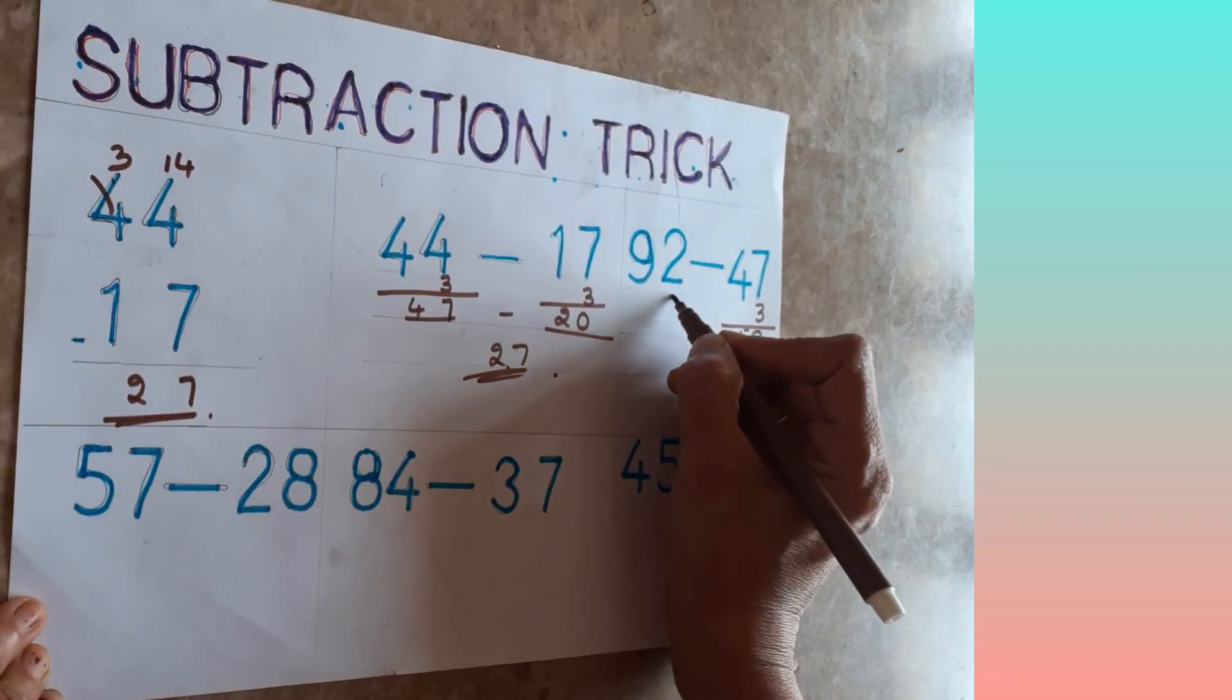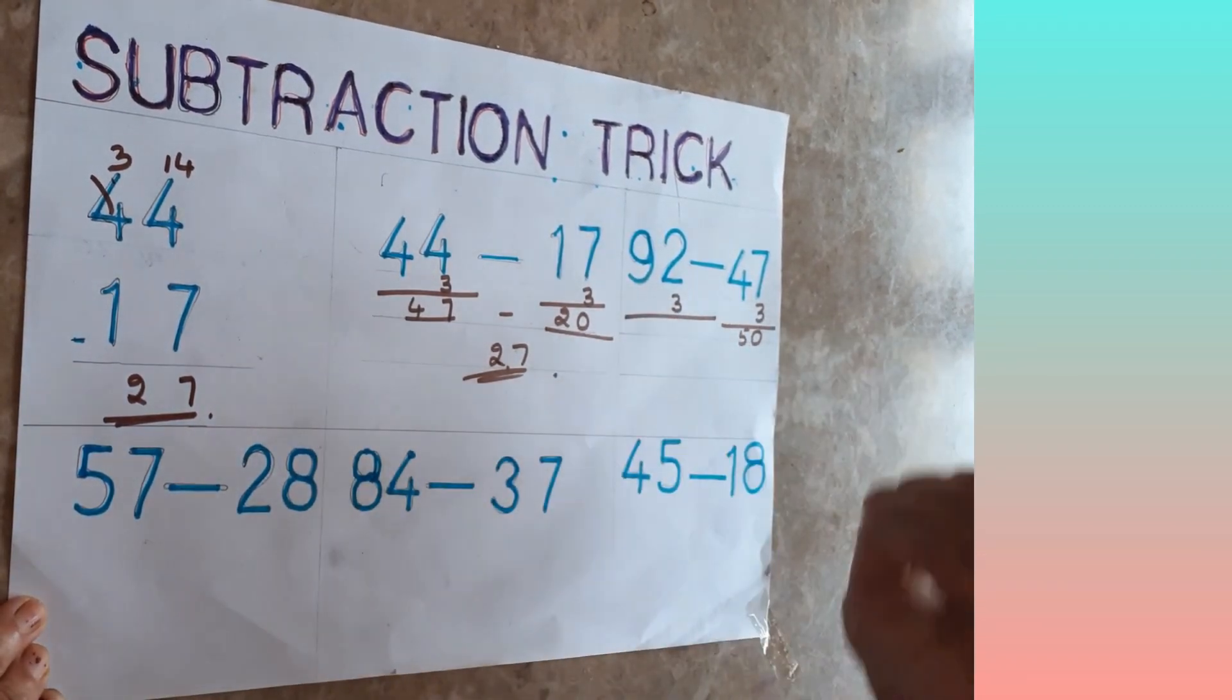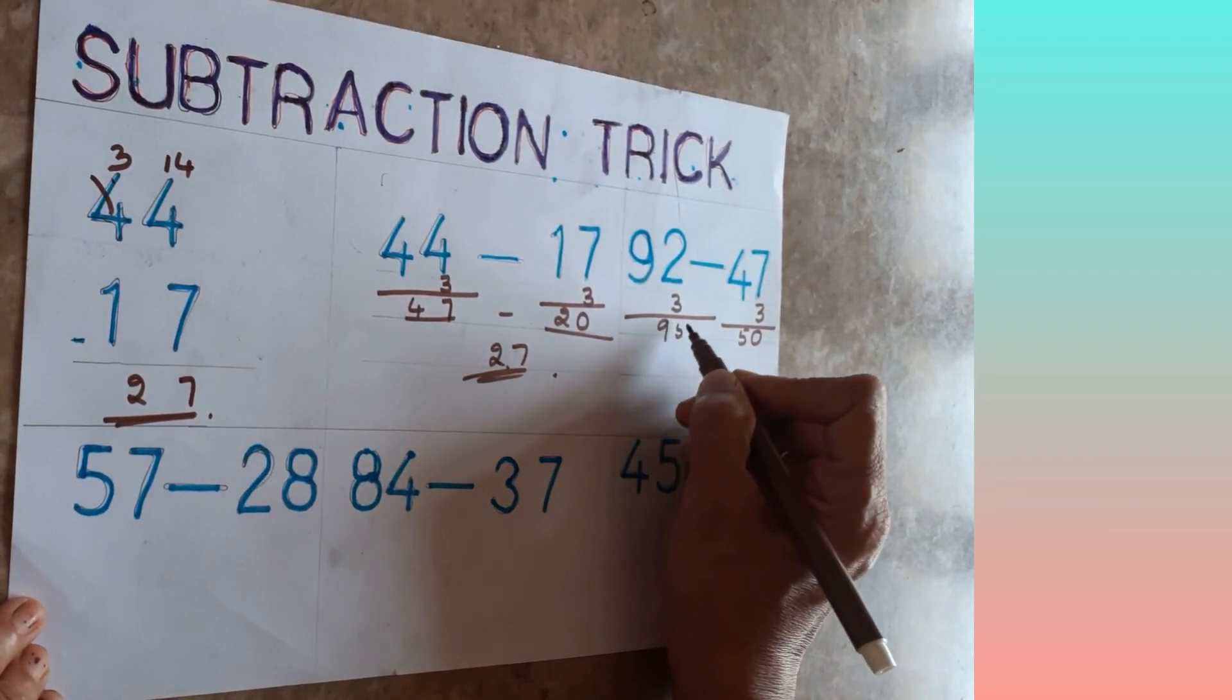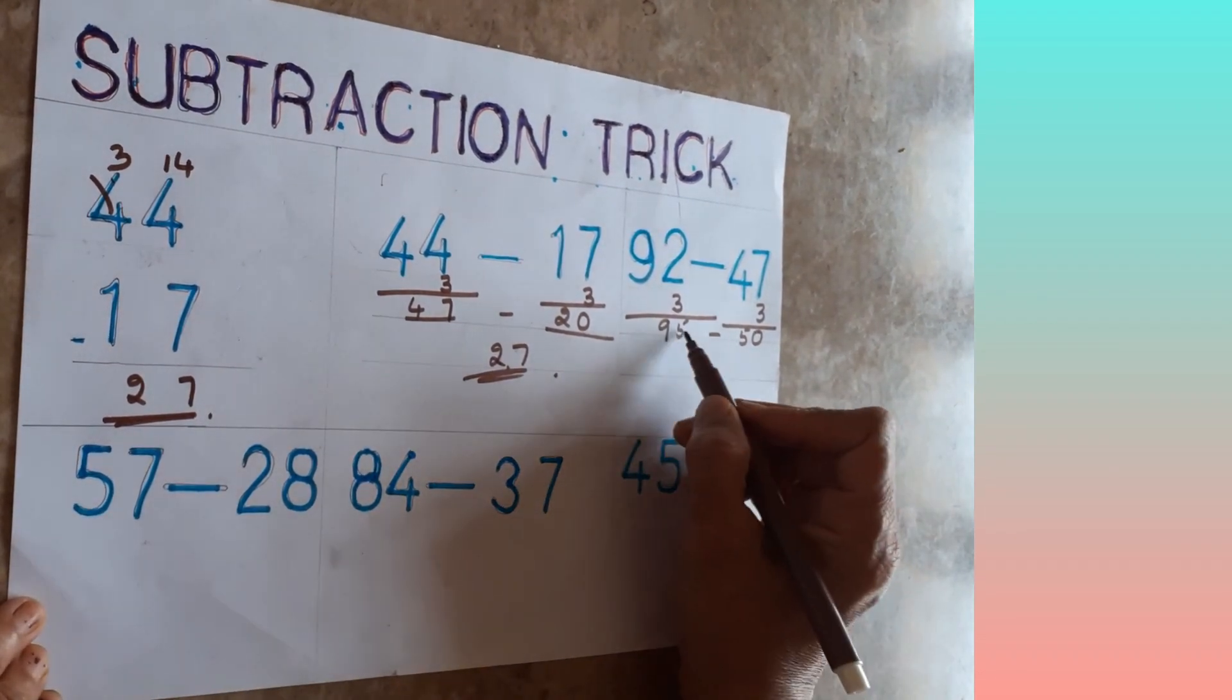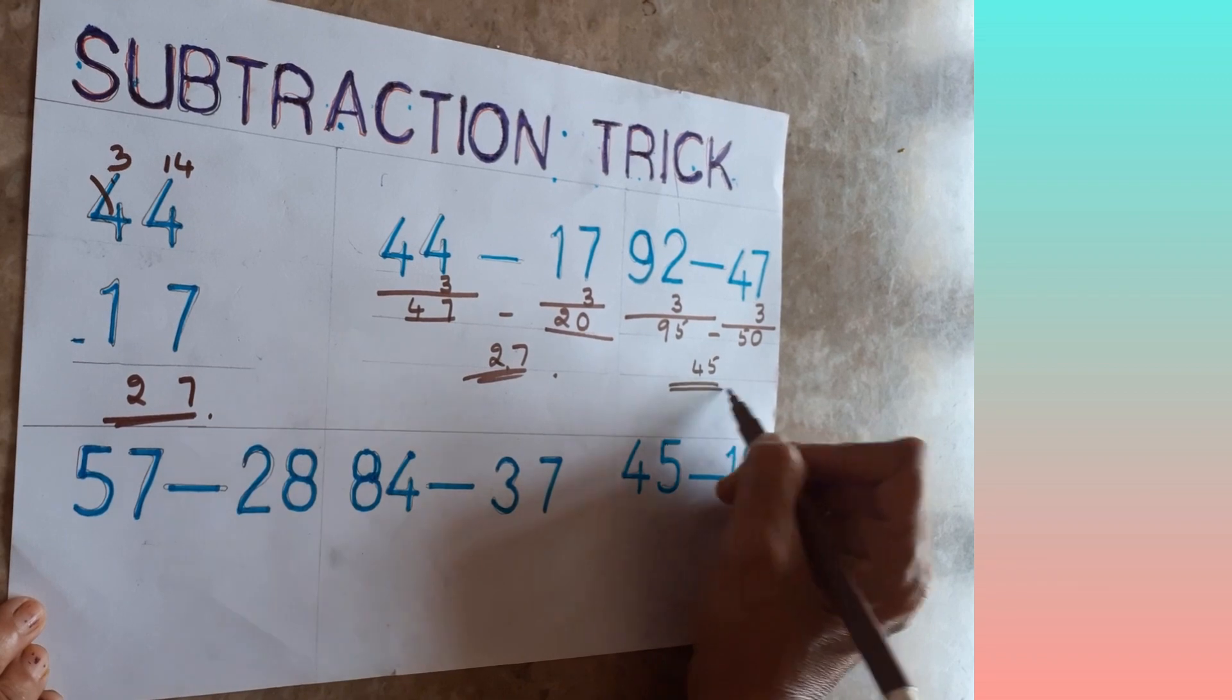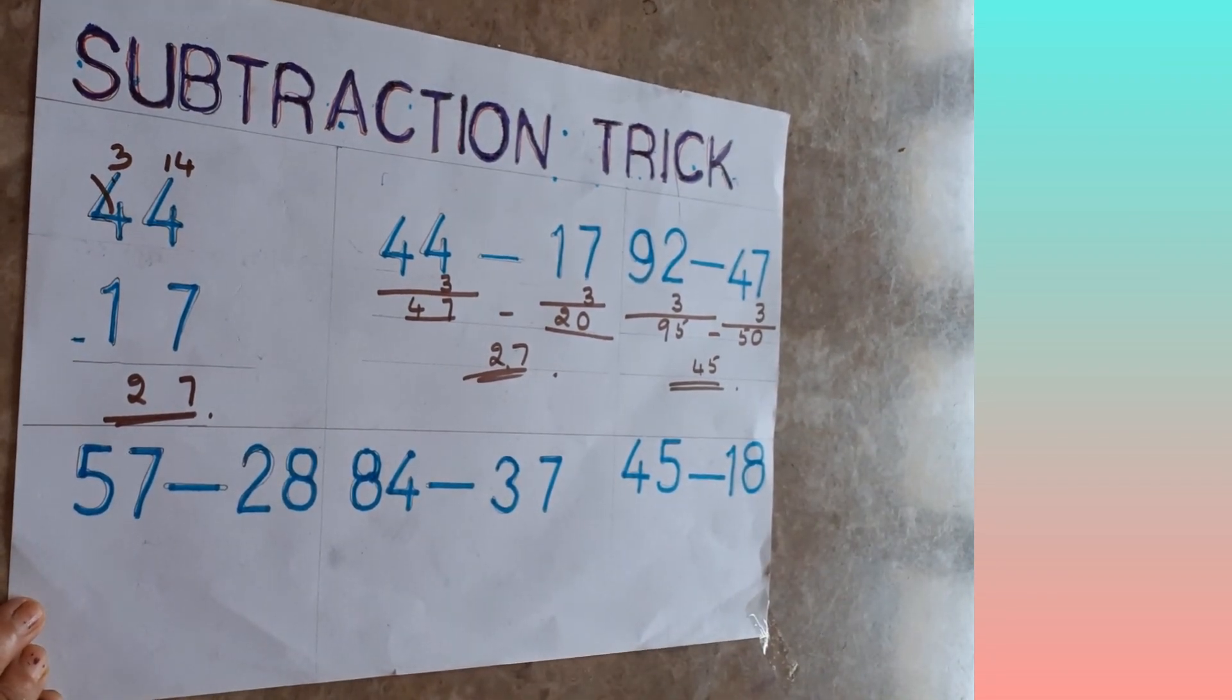Then same number you have to add here. 92 plus 3 is 95. Now you do subtraction, it will be easy for you. 5 minus 0 is 5 only. 9 minus 5 is 4. That's all is the answer.